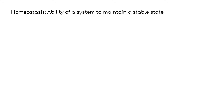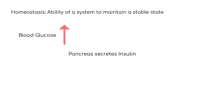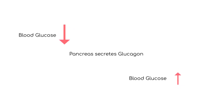Think of how your body maintains certain levels of substances in your blood. For example, your blood contains a sugar called glucose. Your body maintains a certain level of glucose by monitoring the glucose and then secreting certain hormones to raise or lower it. If glucose levels get too high, your body responds by secreting a hormone called insulin to lower glucose. If glucose levels get too low, then your body responds by secreting a hormone called glucagon to raise glucose.